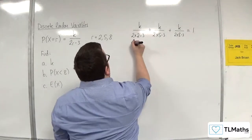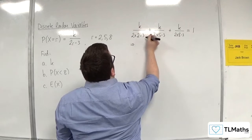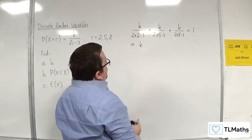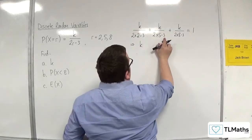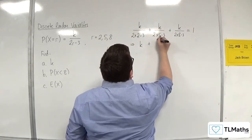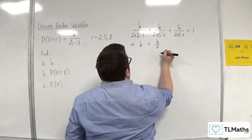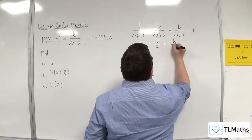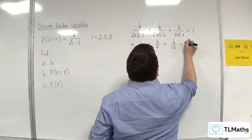So what I have first is k over 1, then we've got k over 7, and then we've got k over 13. It's got to be equal to 1.